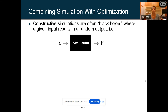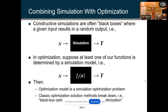What happens if you want to combine the two? Constructive simulations are often black boxes where a given input results in a random output — essentially your x goes through a simulation giving you some form of output. Things are uncertain, so you'd probably want to run this multiple times with different replications to get an understanding of what you're trying to simulate. In optimization, at least one of your functions is going to be determined by the simulation model — you have your f(x), which is your expectation. One thing Optech does is combine both simulation and optimization, giving you the best of both worlds, succeeding where classic optimization solutions can break down.